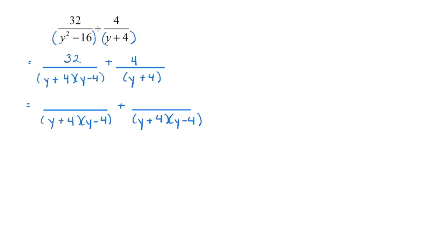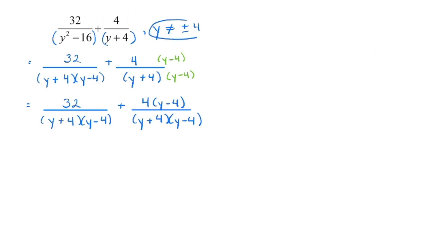I'm not changing anything with my first denominator to get my common denominator. On the second fraction, I am multiplying by y minus 4. So the first numerator stays the same, and because we're multiplying the second denominator by y minus 4, I'm going to multiply its numerator by y minus 4 to keep it equivalent — that gives me 4 times y minus 4 on that fraction, and 32 stays on the first. For non-permissible values: y cannot equal negative 4 or positive 4, so I'll write y cannot equal positive or negative 4.